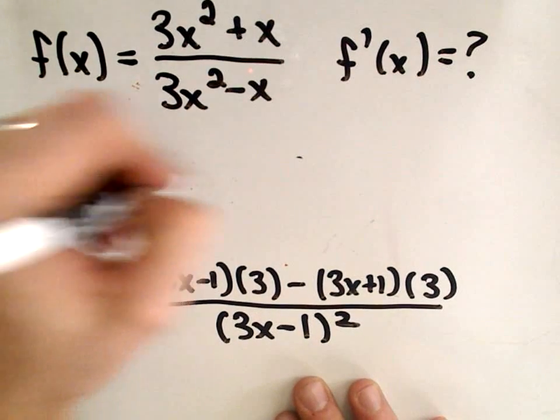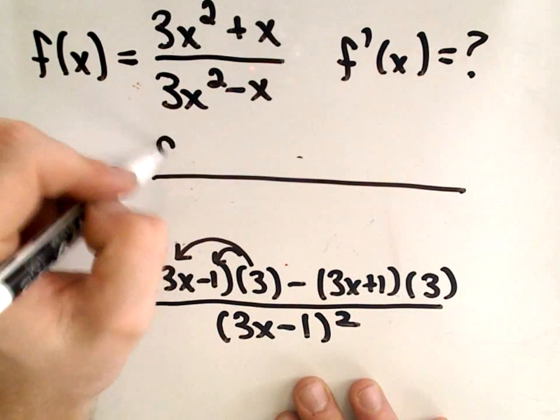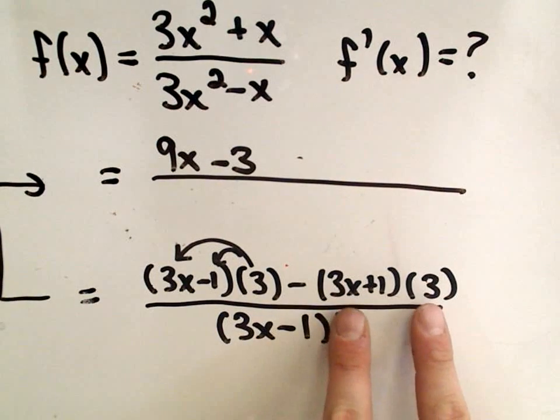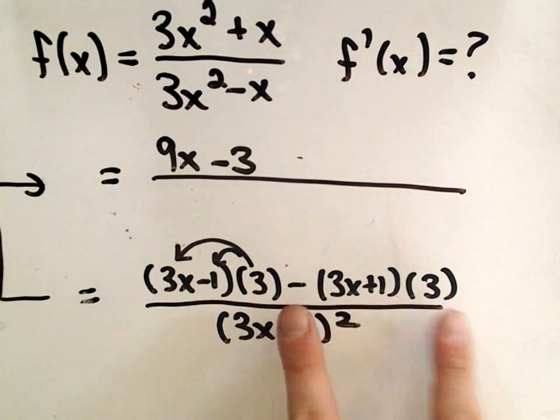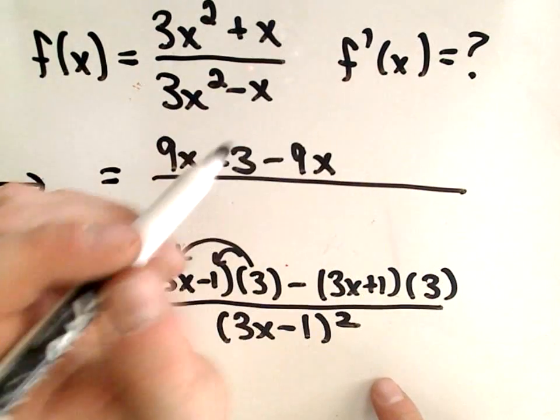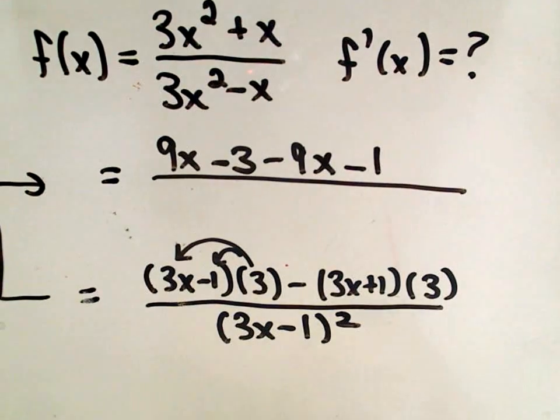So now all we have to do is simplify the numerator and see if anything cancels out. So let's see, when we simplify, we have to distribute the 3 to both terms, so we'll get 9x minus 3. On the right side we'll get 3x and 3, which is 9x, but we have a negative, so minus 9x, and then it looks like we get a minus, let's see, a minus 1. Is my arithmetic all okay here?